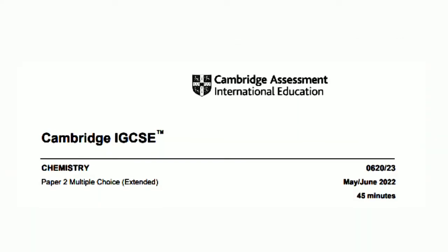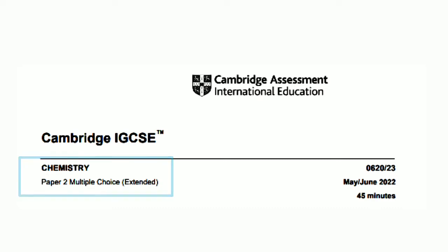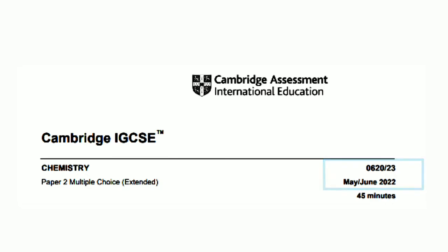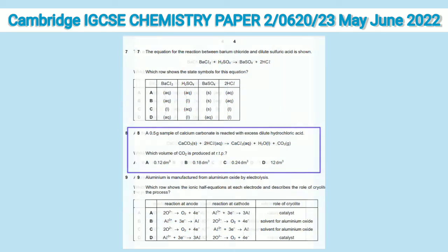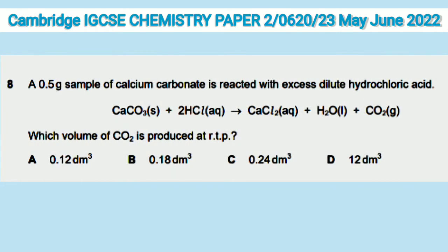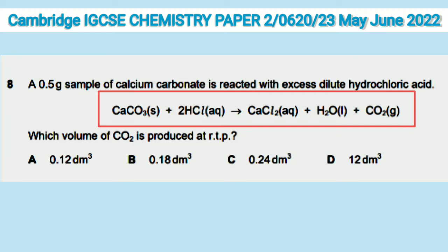Let us solve one question from the chemistry paper 2 multiple choice extended, 0620/23, May/June 2022. It's question 8 of the paper. A 0.5 gram sample of calcium carbonate reacted with excess dilute hydrochloric acid. Which volume of CO₂ is produced at RTP? The first thing we require is a balanced chemical equation, which is already given.